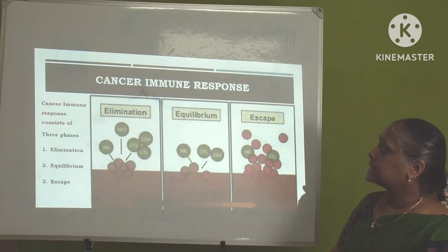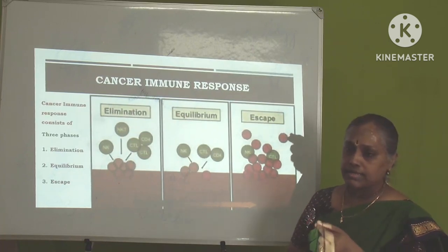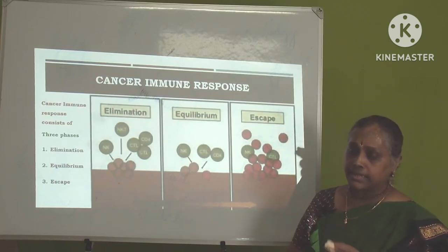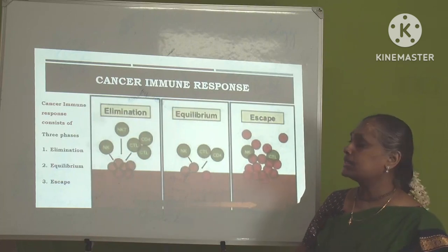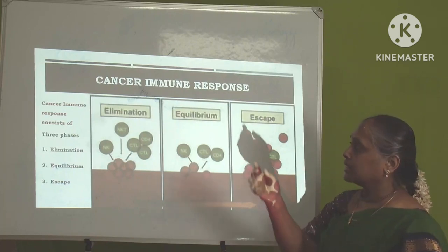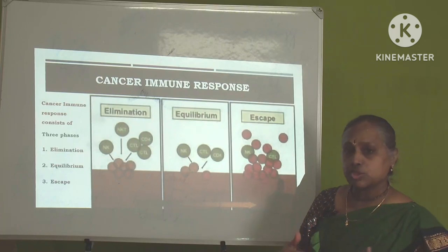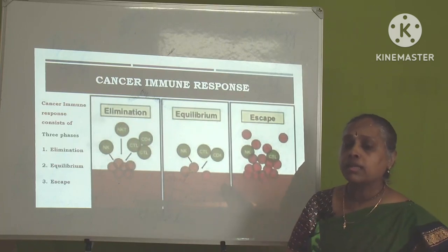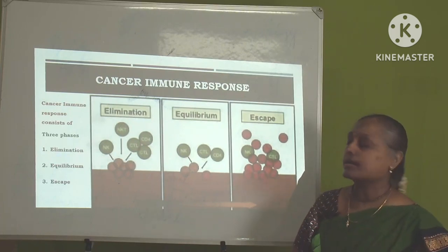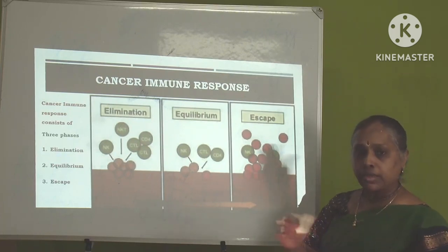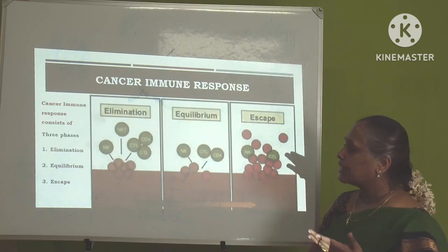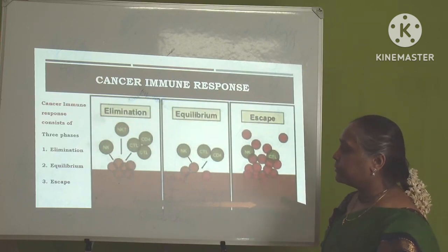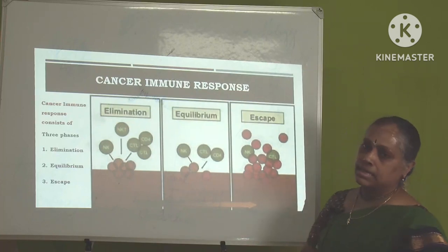This cancer immune response, once a cancer cell is identified by the presence of new or mutated proteins, our immune system starts responding against the cancer cells. It can be divided into three phases: the elimination phase, the equilibrium phase, and the escape phase.